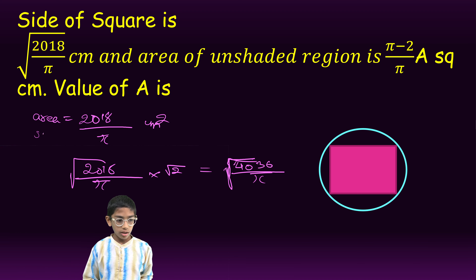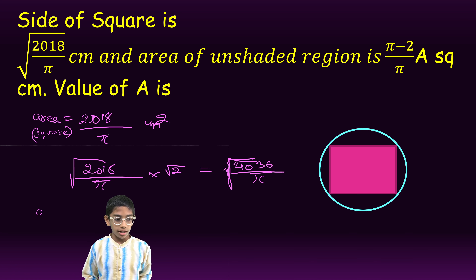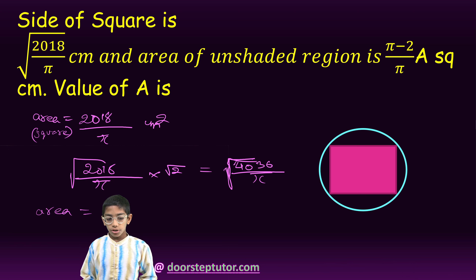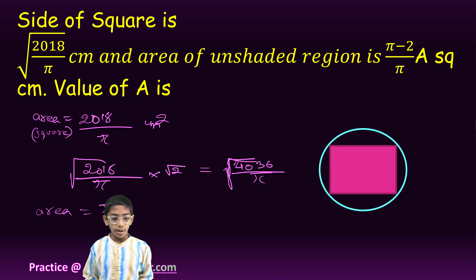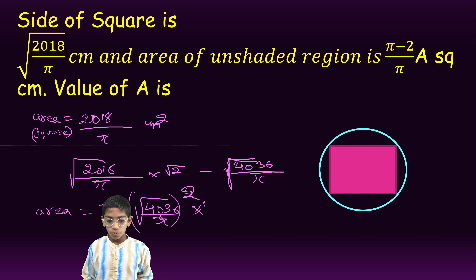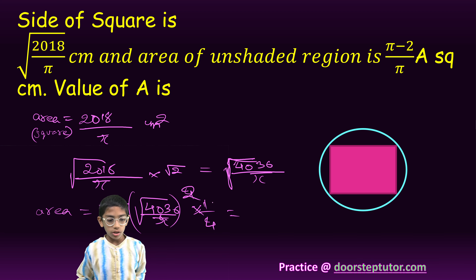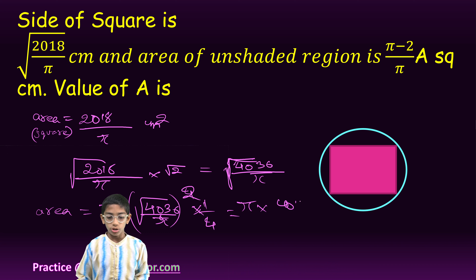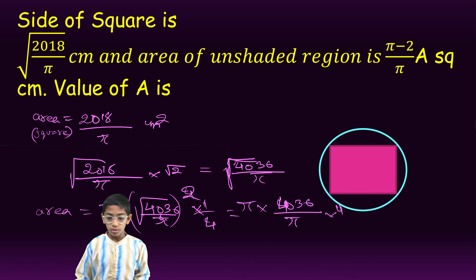Now the area of the circle is equal to pi into diameter squared upon 4. So pi multiplied by under root of 4036 upon pi, the whole squared, multiplied by 1 upon 4. Now we will simplify it: pi multiplied by 4036 upon pi into 4 into 1 upon 4.